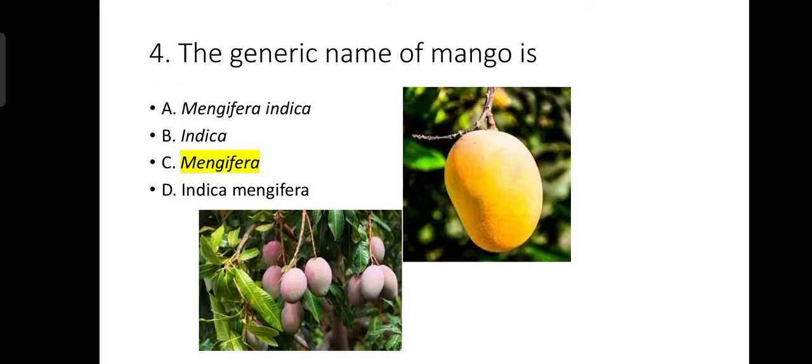Number 4: The question was tricky and several candidates could not find the answer. The question was: the generic name of mango is — it is a very easy question. The generic name is the first name in binomial nomenclature; the first name is generic and the second is the species name. So Mangifera is the generic name of mango, and the full name is Mangifera indica.